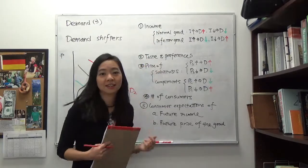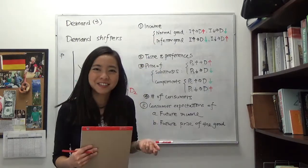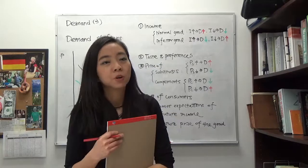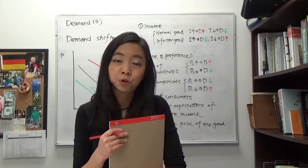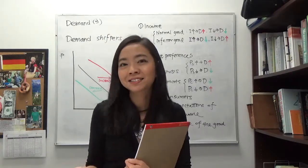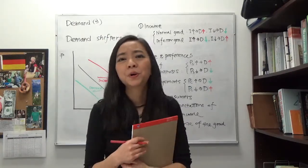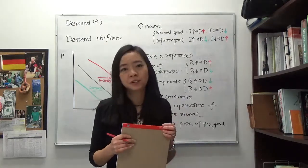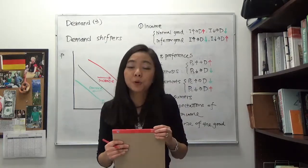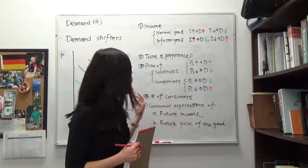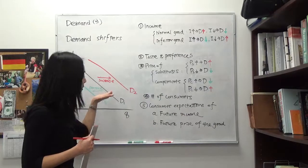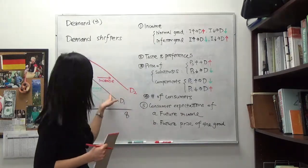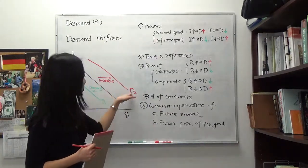The second demand shifter is taste and preferences. For example, you might hear that organic food is good for you because there's no pesticide. After hearing that, you might think organic food is good, so you're going to buy more organic food. That would increase our demand, shifting our demand curve from D1 to D2.